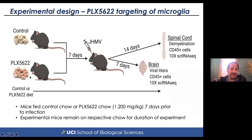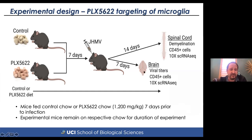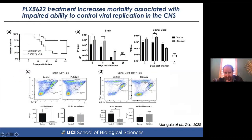PLX3622 comes formulated in chow, so we feed either the PLX chow or control chow to animals for seven days prior to inoculation with virus. A seven-day pretreatment results in greater than 95% depletion of microglia within the CNS. We then infect with virus and look at seven days post-infection — examining viral titers, immune cell infiltration, single-cell RNA-seq, and at spinal cords for severity of demyelination and immune responses. Animals were kept on PLX drug throughout the duration of the experiment.